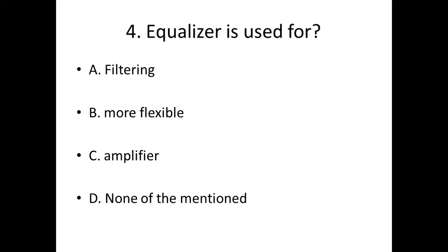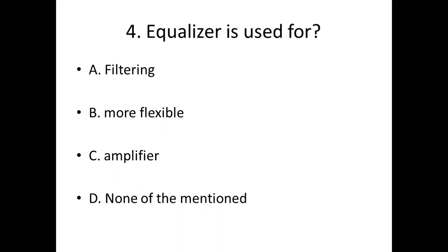Question 4: Equalizer is used for — Option A: filtering. Option B: more flexible. Option C: amplifier. Option D: none of the mentioned. Answer: Option A — filtering.